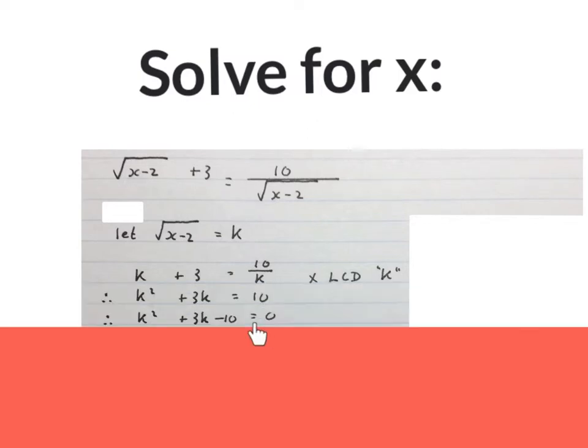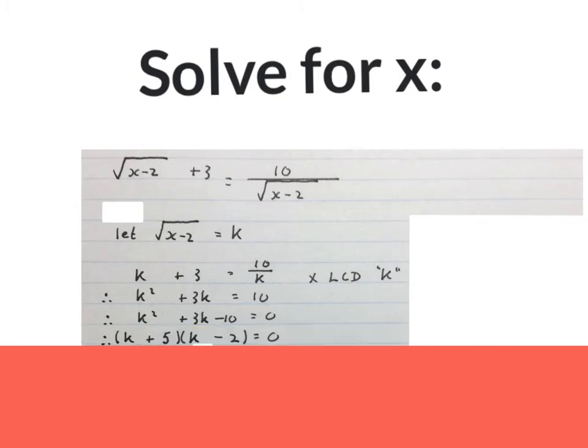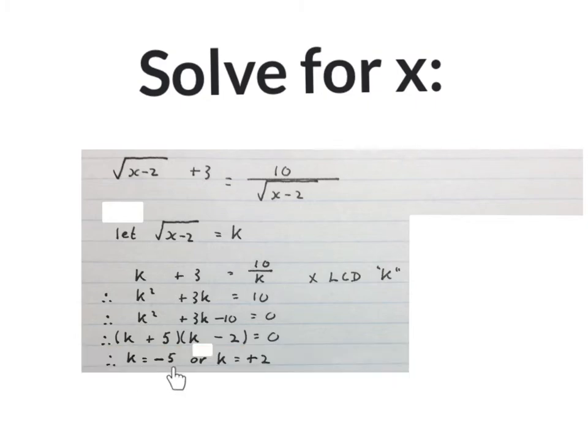The new equation will look like this. Bring everything to one side and equate it to 0. Factorize it, or use the quadratic formula to find K.